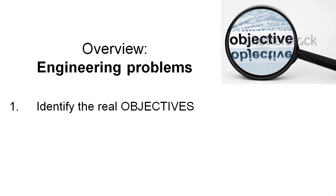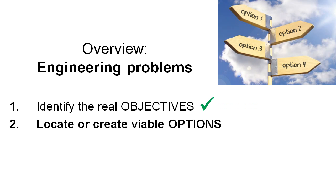The first step in this overview is to identify the real objectives. We've already done that through the OFFAS process which we explained in the previous videos. The next step that we're going to be looking at today is how to locate and create viable options.